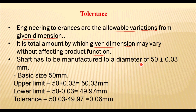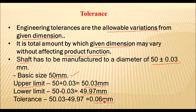Here is an example: a shaft has to be manufactured to a diameter of 50 ± 0.03 mm. Here, 50 is the basic size for that shaft. The upper limit is the maximum value: 50 + 0.03 = 50.03 mm. The lower limit is the minimum value: 50 − 0.03 = 49.97 mm. The tolerance value is the difference between upper and lower limit, which is 0.06 mm. Within this limit, the shaft is acceptable. If a shaft is produced to a dimension of 49.95 mm, it will not be acceptable because it does not lie within these tolerance limits.